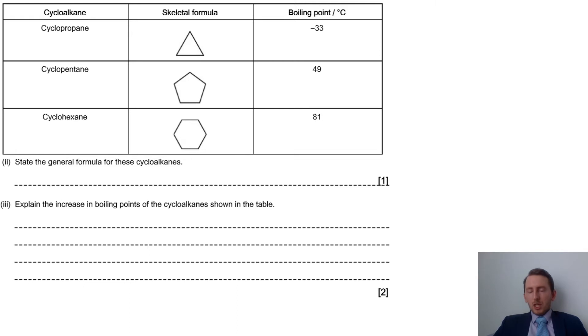Part two asks to state the general formula for these cycloalkanes. It's only worth one mark so we're not trying to push things too far. You can work it out from the skeletal formula by counting up your carbons and knowing how many hydrogens are attached to each carbon.